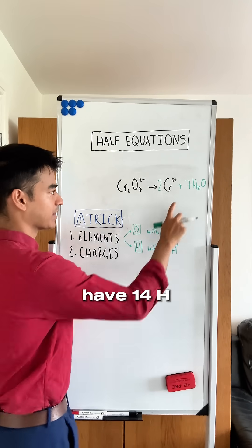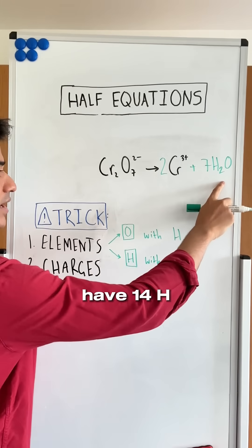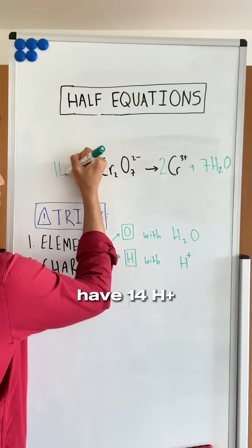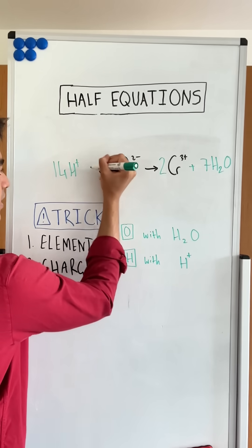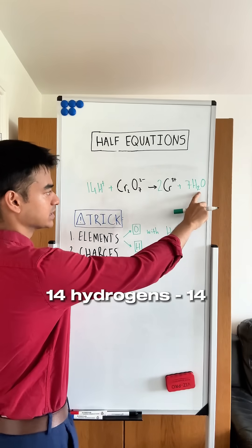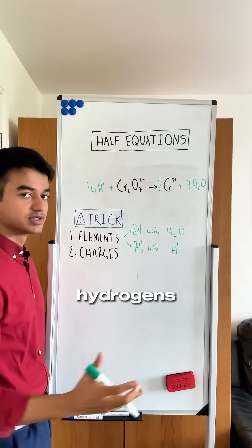Similarly, if we have 14 hydrogens here, I need to have 14 protons here. 14 hydrogens, 14 hydrogens. These are balanced.